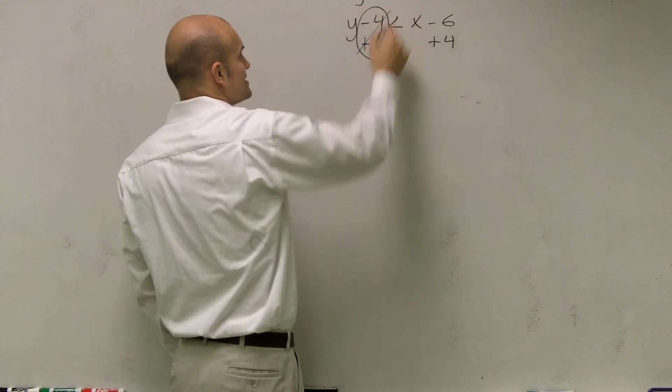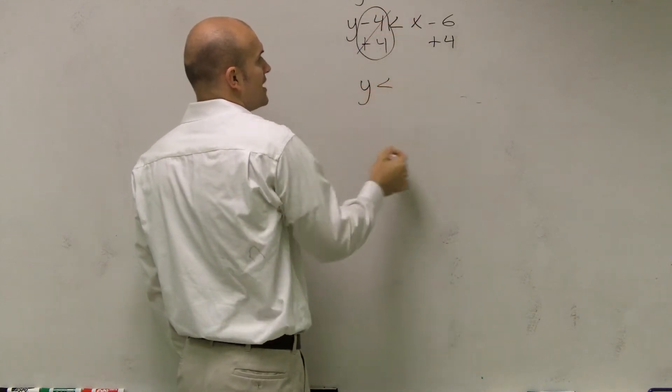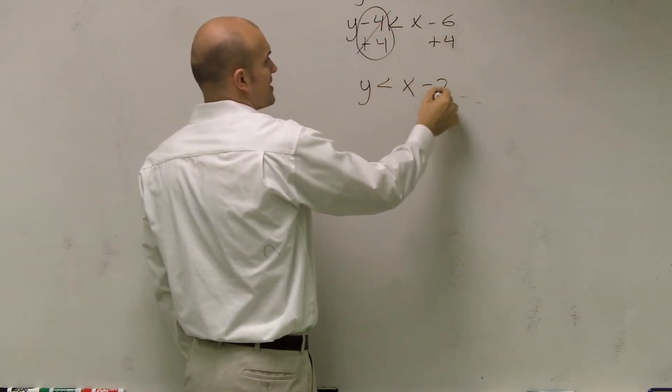So therefore, that's going to now cancel out, and I'm left with y is now less than x. Negative 6 plus 2 is x minus 2.